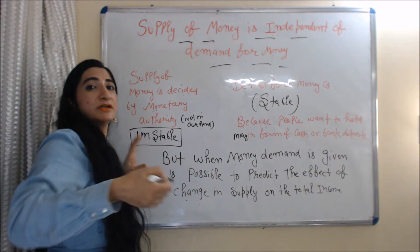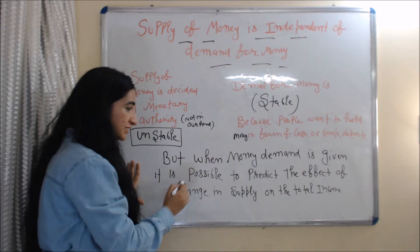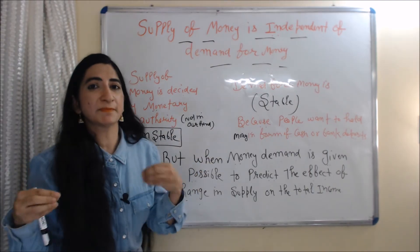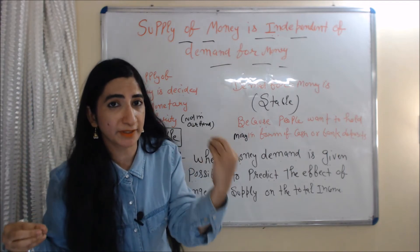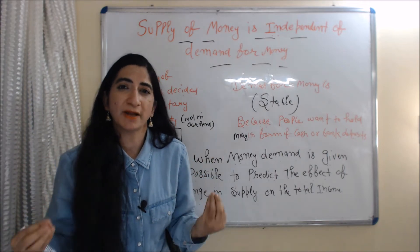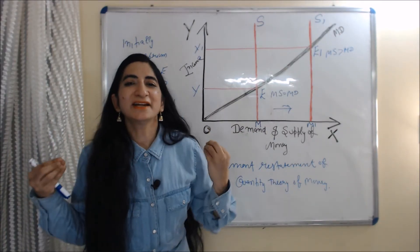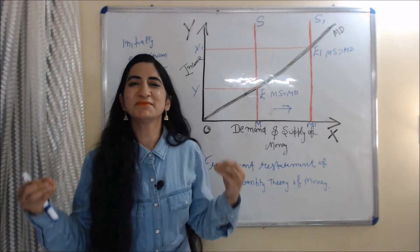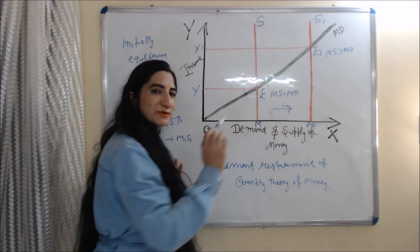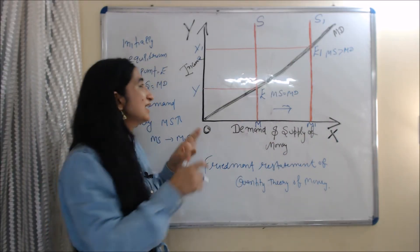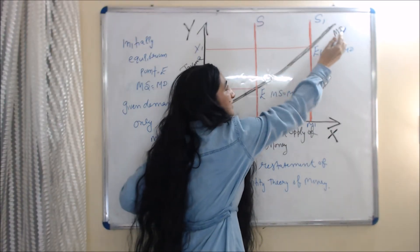When money demand is given, it is possible to predict the effect of a change in supply on total income. Now, with the help of this diagram, we will see that at given money demand, only a change in money supply will affect total income. On the x-axis we have demand and supply of money, and on the y-axis we have income.